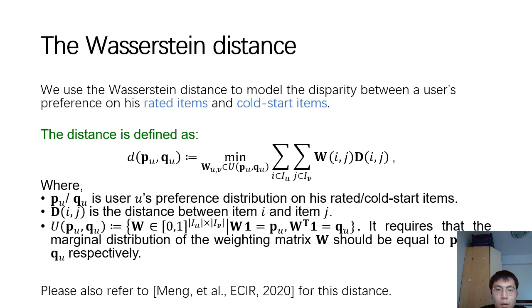We used the Wasserstein distance to model the disparity between a user's preference on his rated items and cold start items.